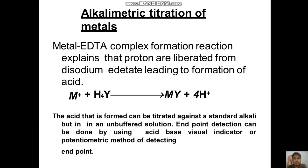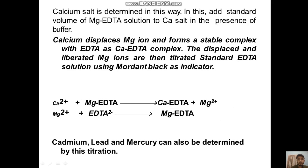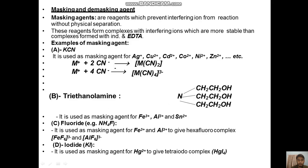The last method is alkalimetric titration of metals. The metal-EDTA complex formation reaction explains that protons are liberated from disodium EDTA, leading to the formation of an acid. This acid can be titrated against standard alkali. In an unbuffered solution, endpoint detection can be done using an acid-base indicator, a visual indicator, or a potentiometric method.